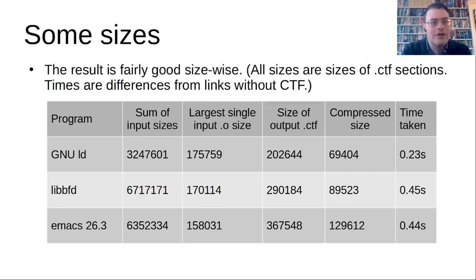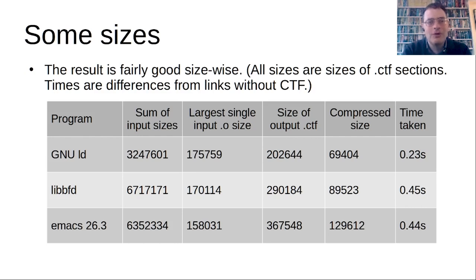The result is pretty good as far as sizes go. These are uncompressed CTF section sizes — CTF is almost always compressed with gzip. LD drops from 3.2 MB of CTF on input to 200k on output, and 60k-70k after compression. Emacs drops from 7 MB all the way down to 129k. In many cases the output is smaller than a single object file's worth of input. Time-wise it takes almost no time at all, even though it's single-threaded and not really optimized, with lots of low-hanging fruit to improve.